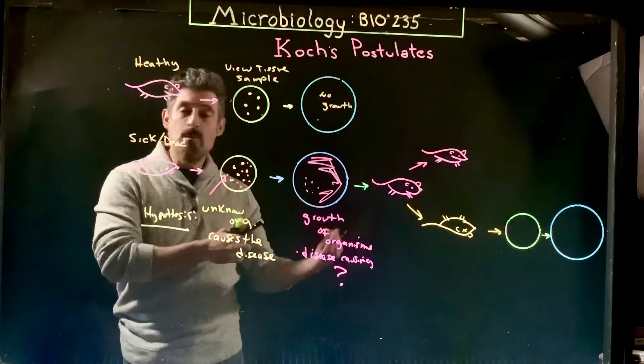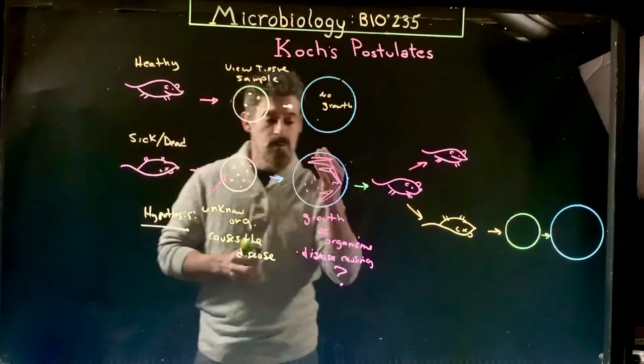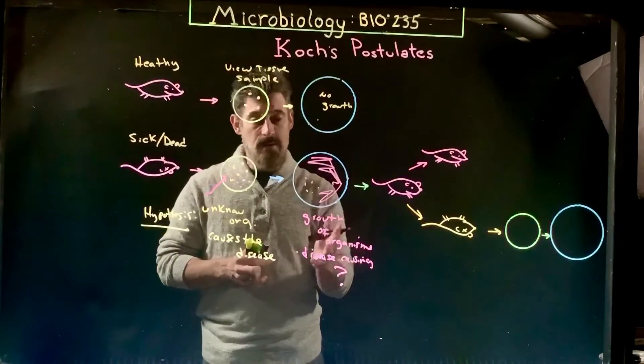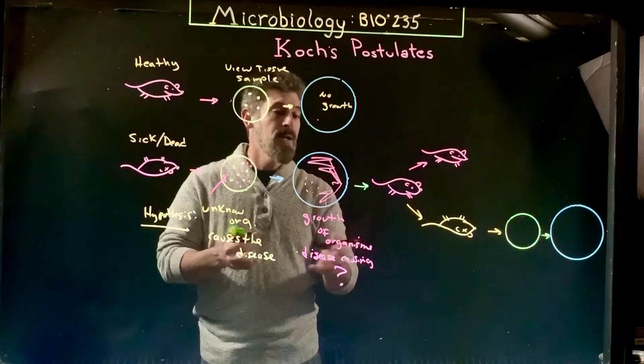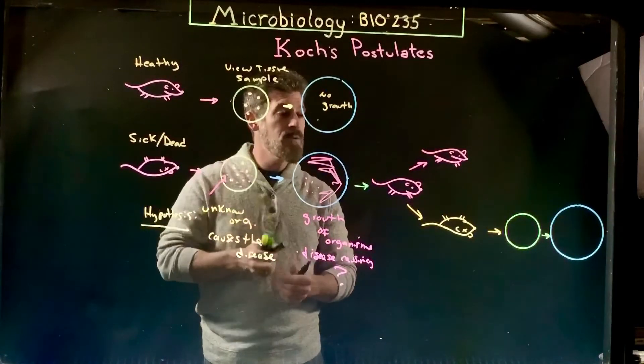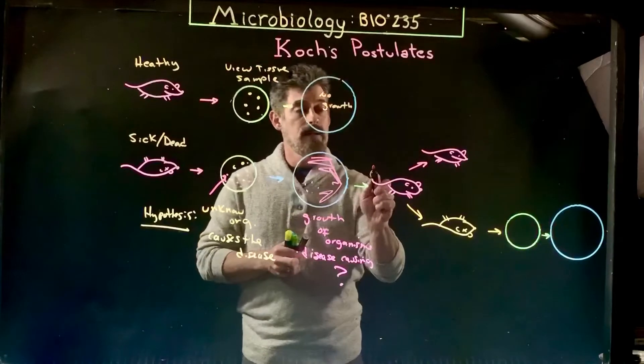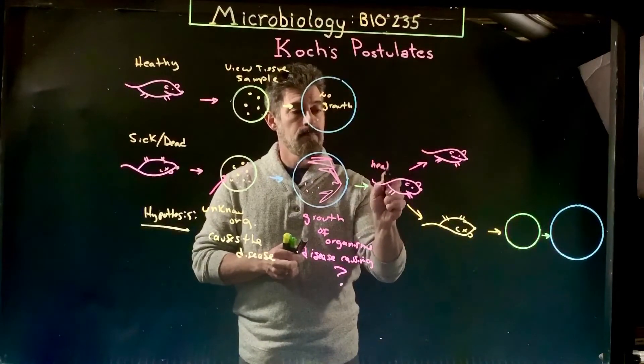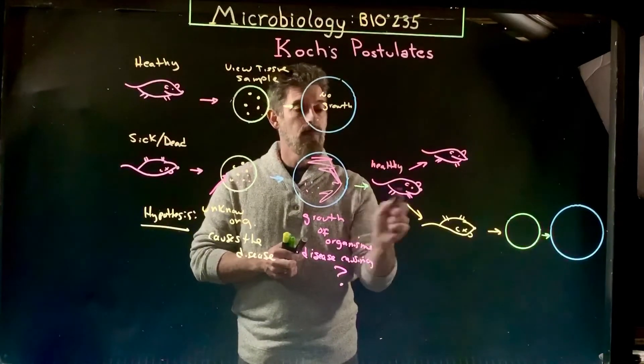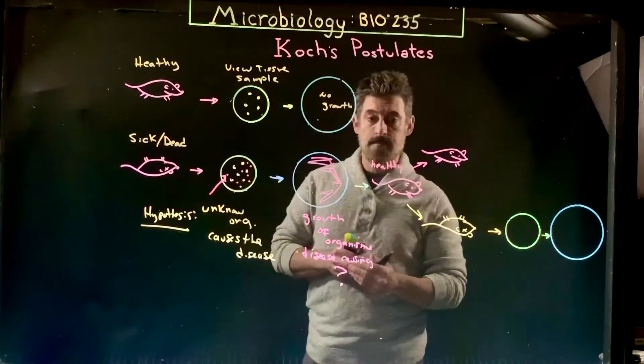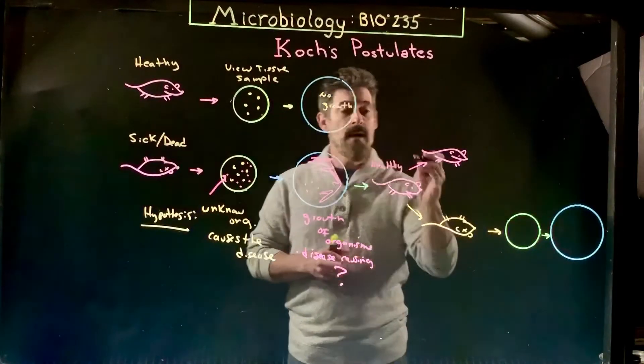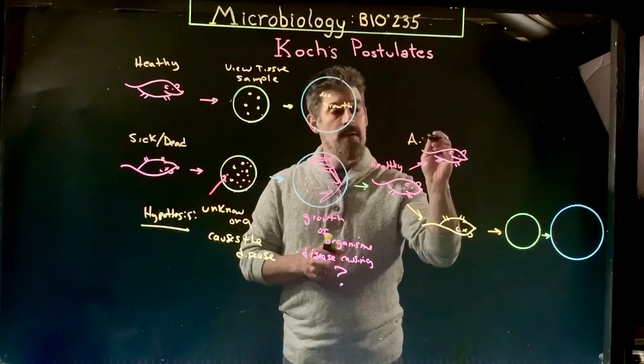If you can grow them, then we move on to the next stage. So we get this organism that grew up on our plates that we don't find in the healthy individuals, and we say, 'Here we go. We're going to get a healthy individual and we're going to expose them to this organism.'